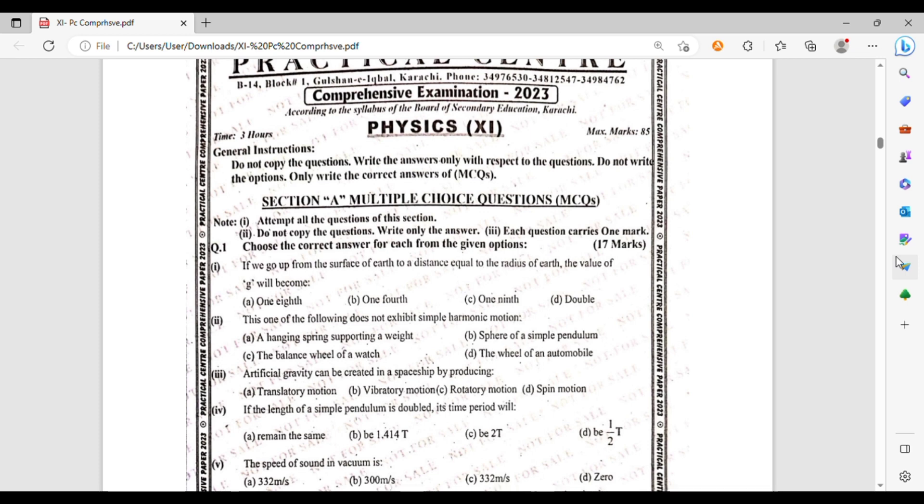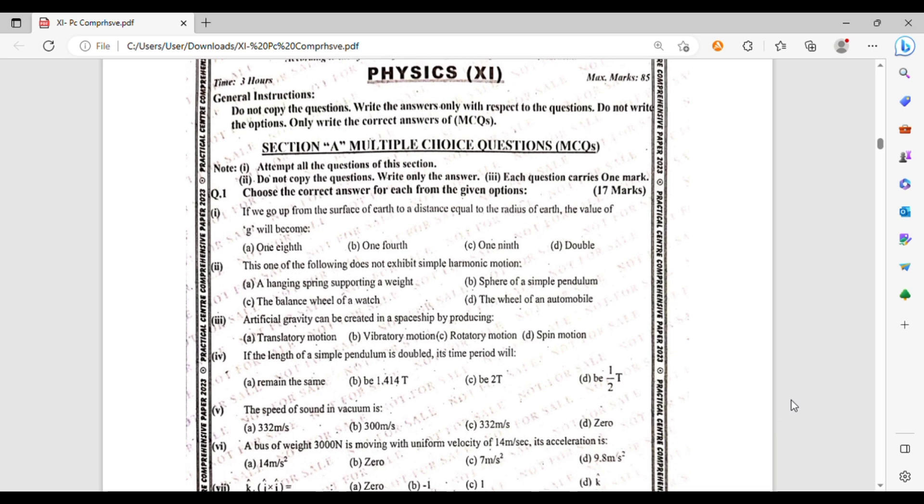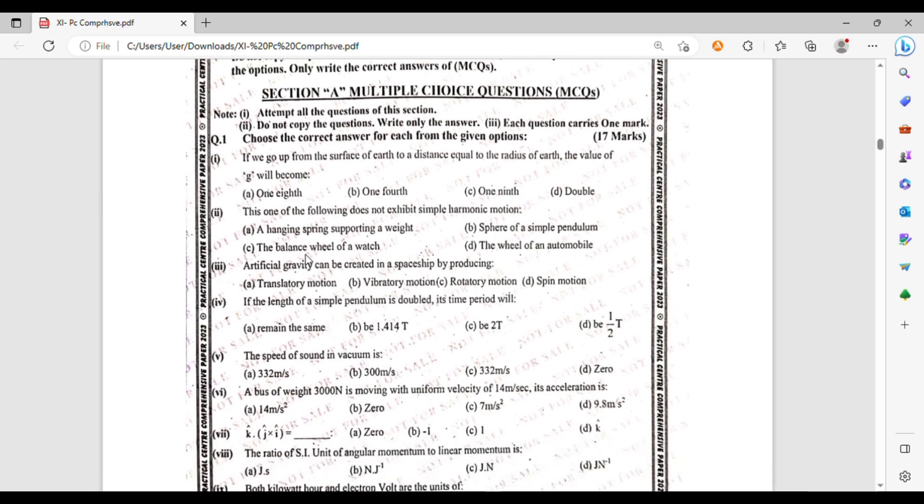Now we have to check the physics MCQs. First, if we go up from the surface of the earth to the distance equal to radius of the earth, the value of G will become one-eighth, one-fourth, one-ninth, or double. Which one of the following does not exhibit simple harmonic motion: a hanging spring supporting a weight, a spherical pendulum, spherical bob of a simple pendulum, or the balance wheel of a watch.